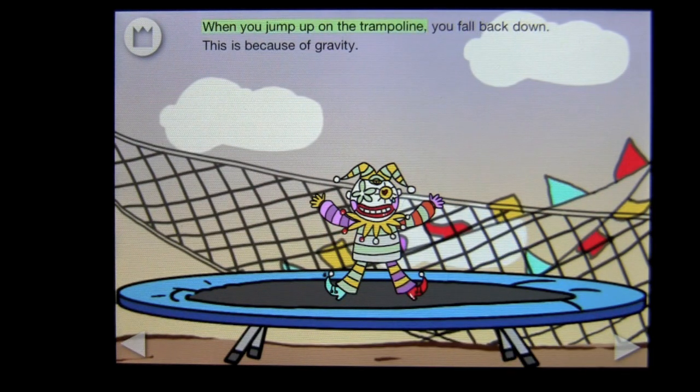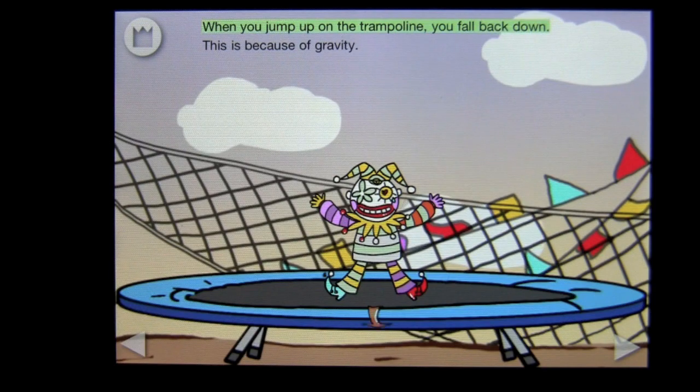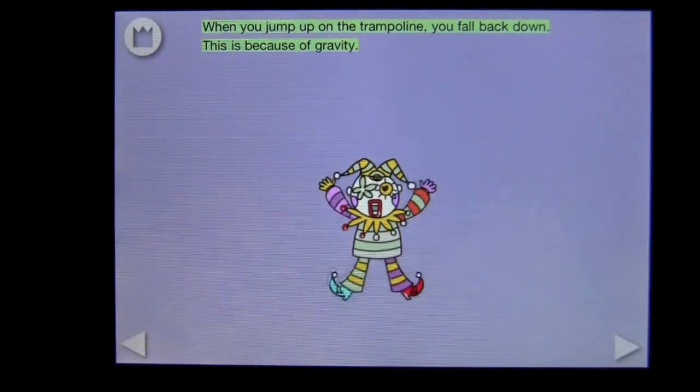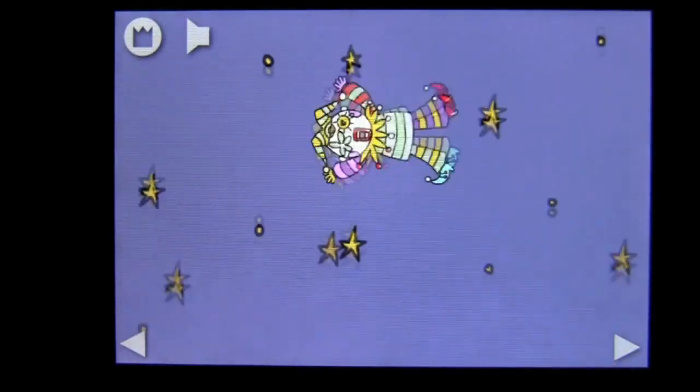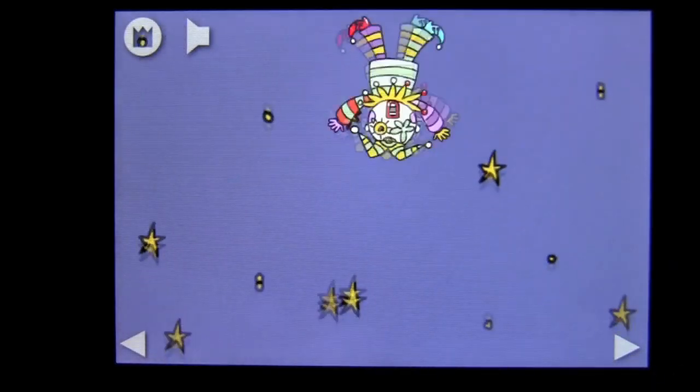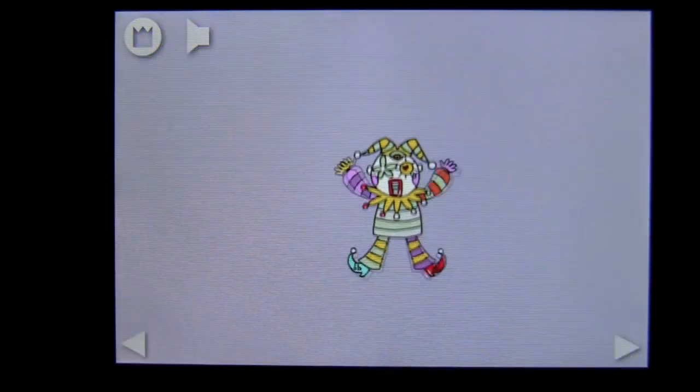On the trampoline you fall back down. This is because of gravity. So this is the gravity portion. You can sling the clown into the air using the trampoline and that is another great way to help kids become familiar with scientific principles.